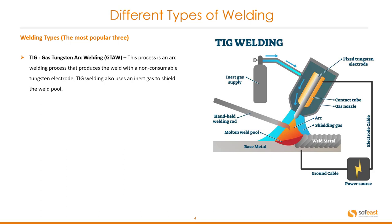The second most popular type is TIG. TIG is gas tungsten arc welding or GTAW. This process is an arc welding process that produces the weld with a non-consumable tungsten electrode. TIG welding also uses an inert gas to shield the weld pool. Looking at the cross-section for a TIG welding setup, we can see the welding gun and that fixed tungsten electrode. We've got the inert gas supply and in this case we have the handheld welding rod which is fed into the weld pool.